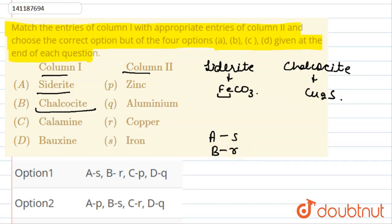C is Calamine. Calamine has the formula ZnCO3. So C matches with P, which is Zinc.